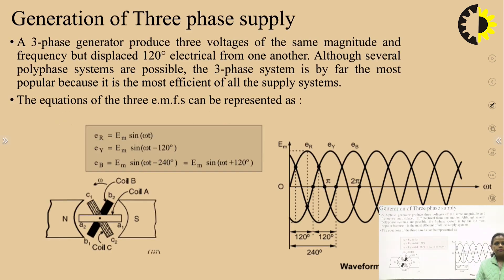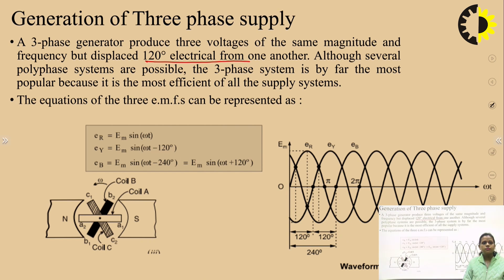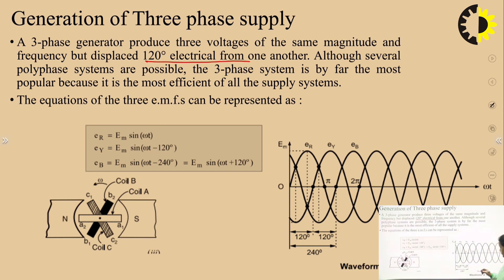A three-phase generator produces three voltages of the same magnitude and frequency but displaced by 120 electrical degrees from one another. Although several polyphase systems are possible, the three-phase system is by far the most popular because it is the most efficient of all supply systems. Here you can see three waveforms Er, Ey, and Ev, all displaced from each other by 120 degrees.